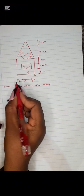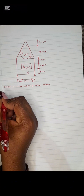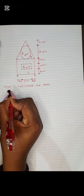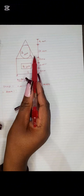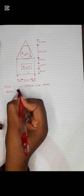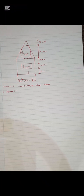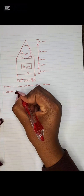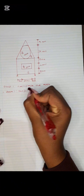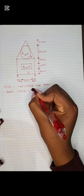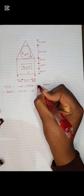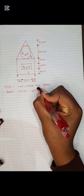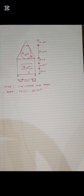Shape 1 is the rectangle. Area 1 equals 46 times 30, which is 1380 mm². That's Area 1.